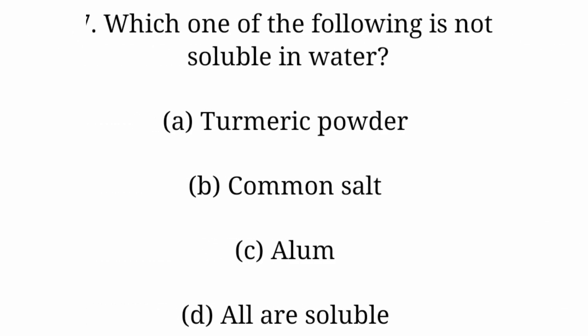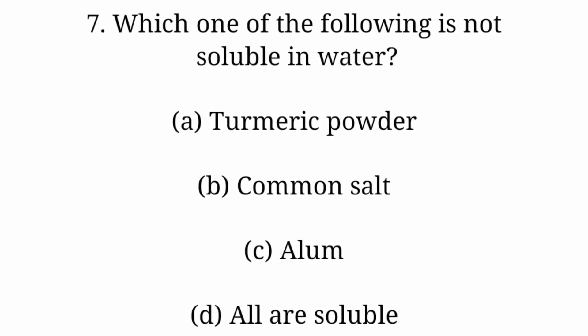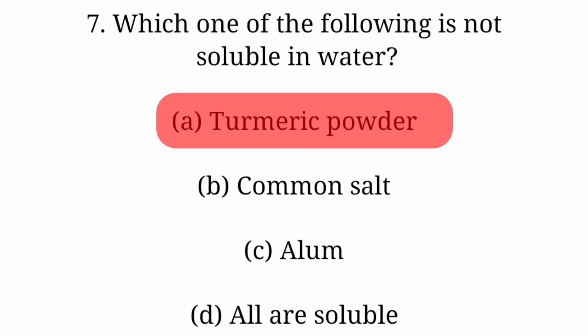Question 7: Which one of the following is not soluble in water? Option A: Turmeric powder. Option B: Common salt. Option C: Alum. Option D: All are soluble. Answer is Option A: Turmeric powder.